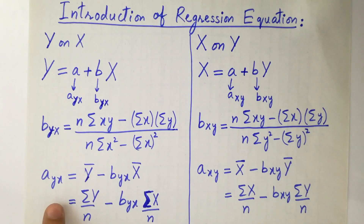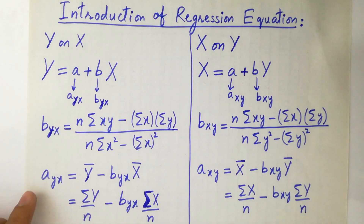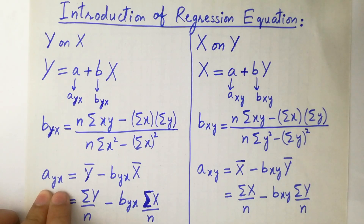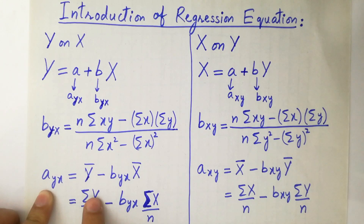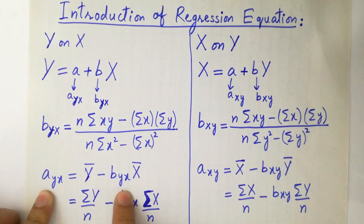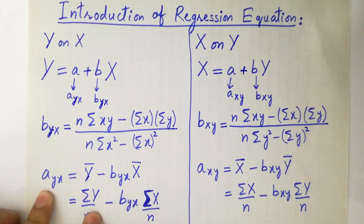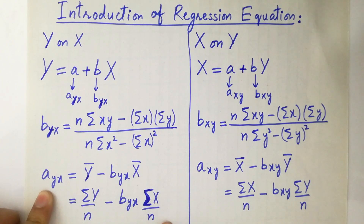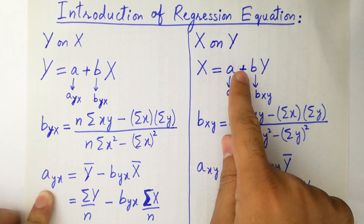And a_yx is equal to ȳ minus b_yx·x̄. Here ȳ = Σy/n and x̄ = Σx/n. Similarly, for x on y, x = a + by.